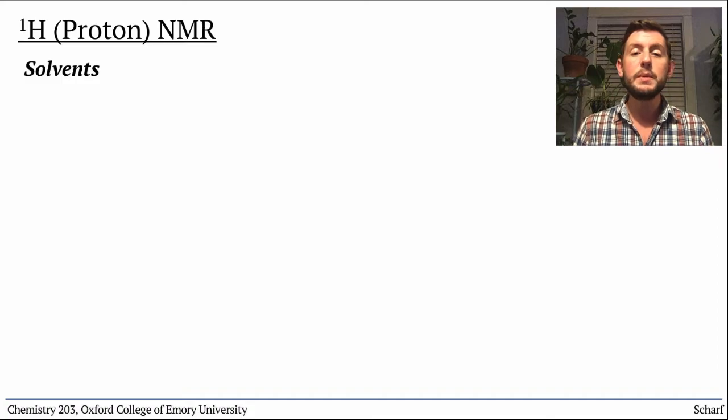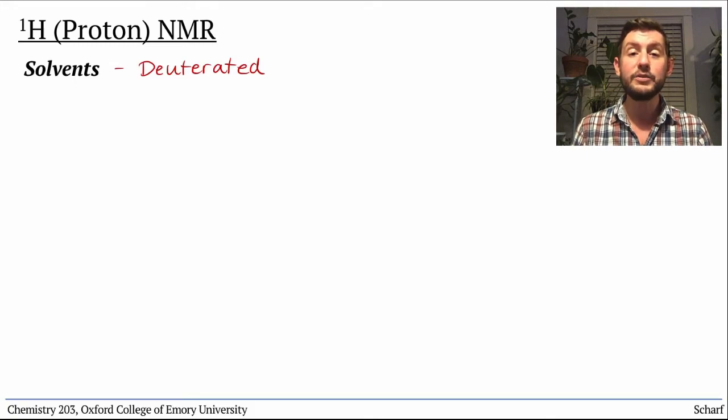To get around this, we typically use deuterated solvents for proton NMR, in which all of the hydrogen atoms of the solvent have been replaced by deuterium, 2H, the heavier isotope of hydrogen, which does not absorb radio frequencies in the same range as protons, so it doesn't interfere.